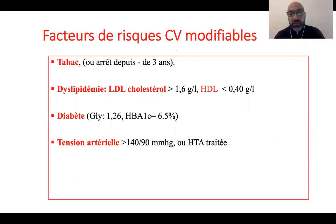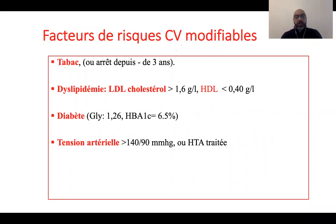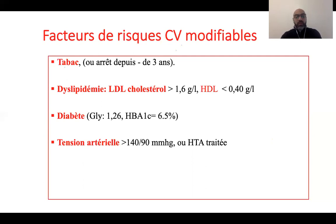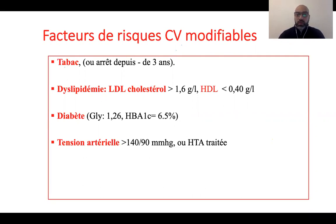Le diabète est un facteur de risque modifiable puisqu'on peut agir sur les chiffres de glycémie et d'hémoglobine glycée. On parle de diabète à partir d'une glycémie à 1,26 g/L et/ou une hémoglobine glycée supérieure ou égale à 6,5%. La tension artérielle est un facteur de risque à partir de 140 mmHg de systolique et 90 mmHg de diastolique. Le plus important lorsqu'on connaît sa maladie, c'est d'atteindre les cibles : hémoglobine glycée inférieure à 6,5% pour le diabétique et des chiffres tensionnels inférieurs à 140/90 pour le patient hypertendu.